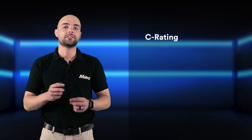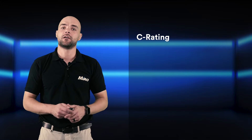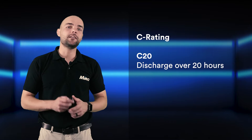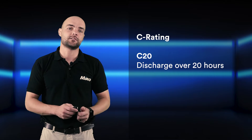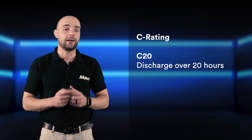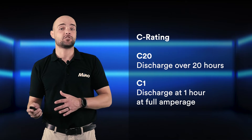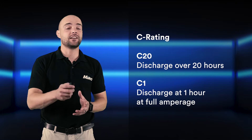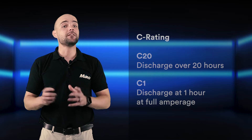Another key concept is C rating, which describes how much current the battery will deliver over a set period of time. For example, a C20 rating means that the battery must be discharged over 20 hours, which limits the maximum amperage that can be drawn from the battery. A C1 battery means that the battery can be discharged in one hour, and if it is a 100 amp hour battery, this means that the battery can be discharged at 100 amps for one hour.